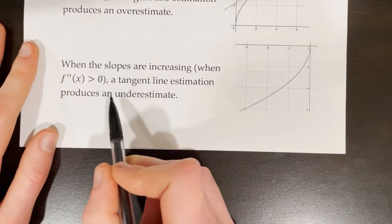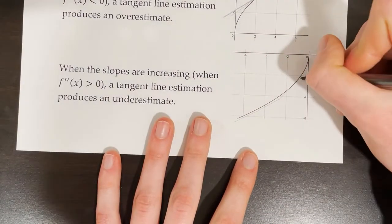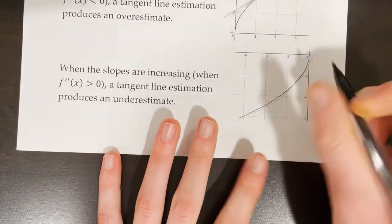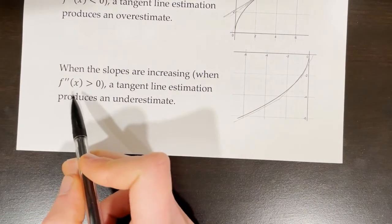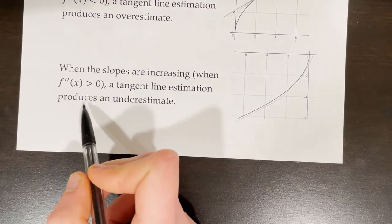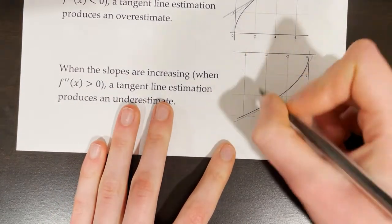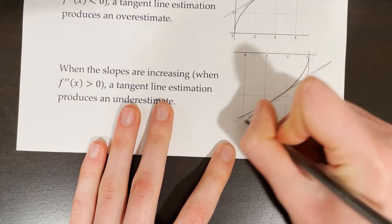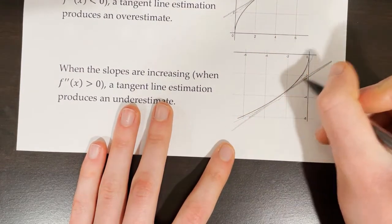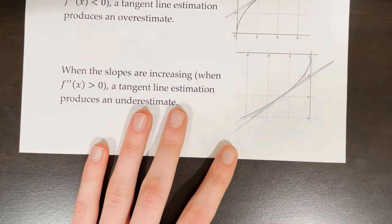When the slopes are increasing — going from 0.5 to 0.75 to 0.9 — that is when f double prime of x is greater than 0. When the second derivative is positive, a tangent line estimation produces an underestimate, because if the graph is concave up, our tangent line will produce an underestimate of what the function really is.